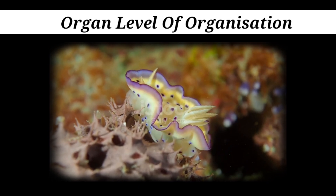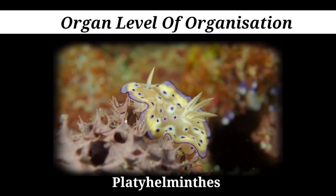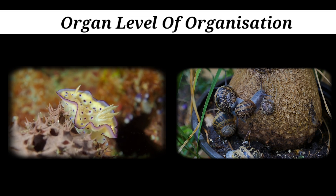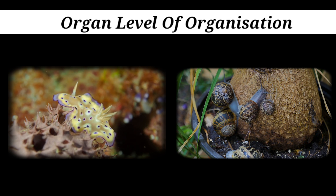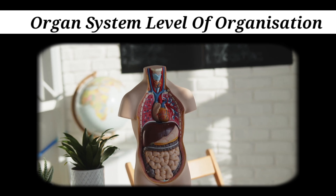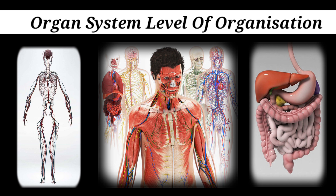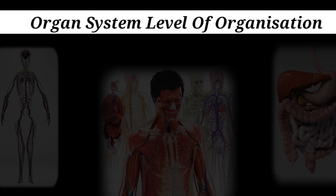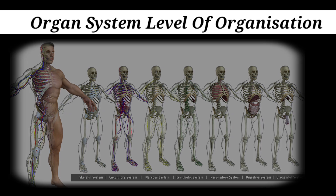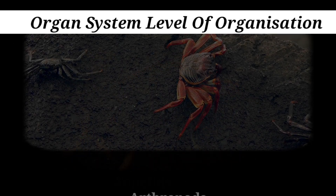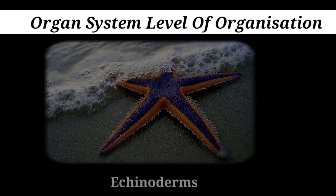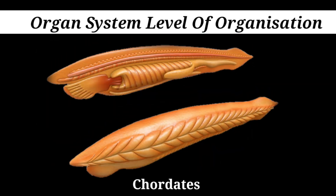Organ level of organization is exhibited in members of platyhelminthes and other higher phyla. Here, the tissues are grouped to form organs, and each organ performs a particular function. The last cell pattern is the organ system level of organization, where organs are associated with one another to form a functional system, and each system performs a specific physiological function. Animals like annelids, arthropods, molluscs, echinoderms, and chordates exhibit this level of organization.